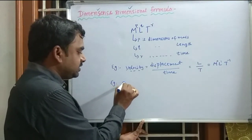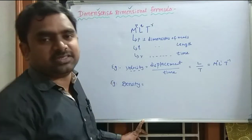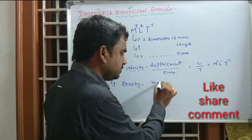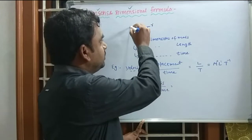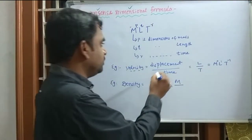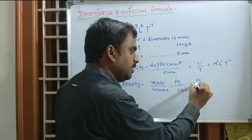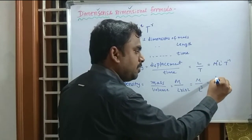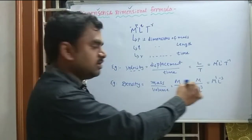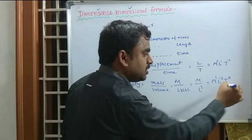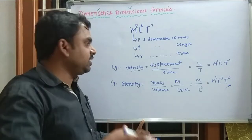For example, density is mass per unit volume. So density equals mass by volume. Mass has dimension M, and volume is L into L into L, which is L power 3. Therefore, the dimensional formula for density is M¹ L⁻³ T⁰.